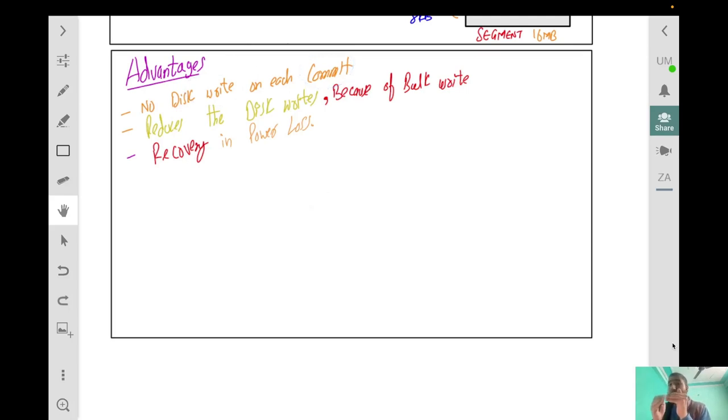Now let's move to the advantages. The biggest advantage is that every time we write to the database we don't have to commit to disk immediately. The second is that we reduce disk writes because of bulk writes. For example, if we have three queries and there are common pages between them, instead of writing to those pages multiple times, we can do bulk writes. That is how bulk writes help.